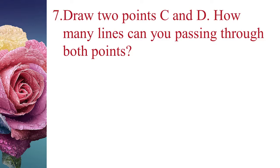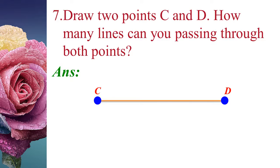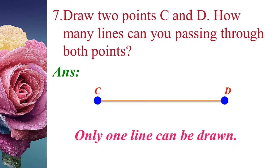The seventh problem: Draw two points C and D. How many lines can pass through both points? We draw points C and D and join them. We get only one line segment CD. Therefore, only one line can be drawn through two given points.